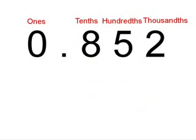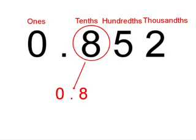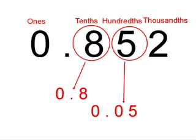Our second number is 0.852. The 8 is in the tenths column. The 8 is actually 0.8. The decimal point means the 8 is smaller than 1. The 5 is in the hundredths column. The 5 is actually 0.05. This number is also less than 1 because of the decimal point.